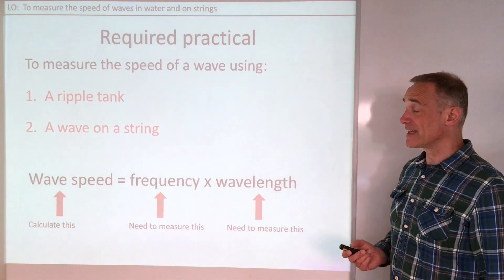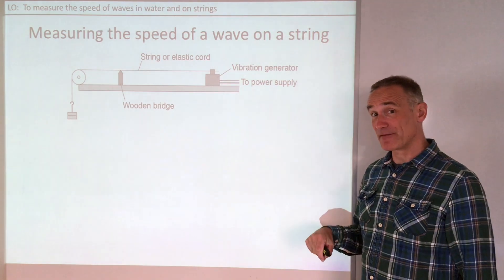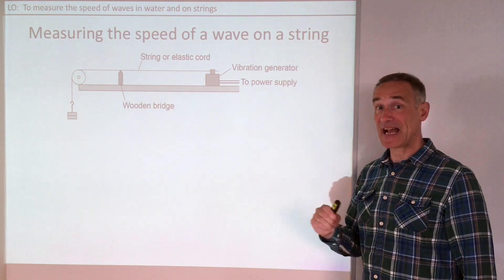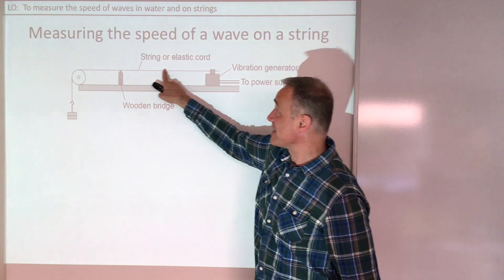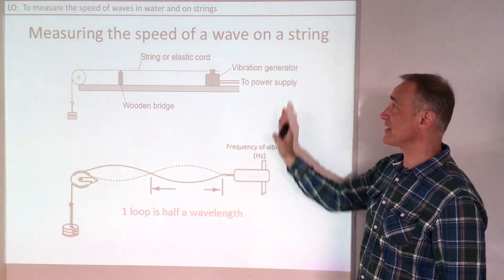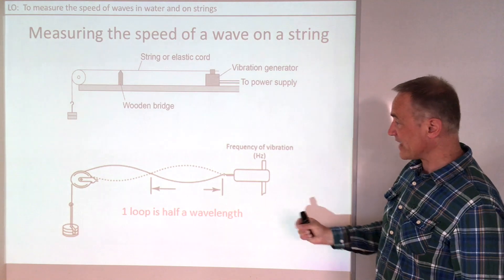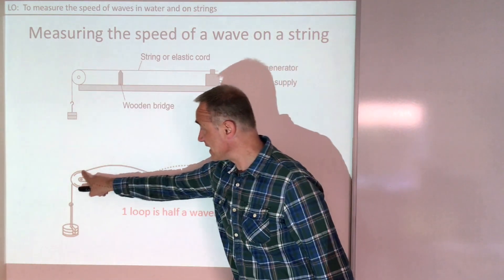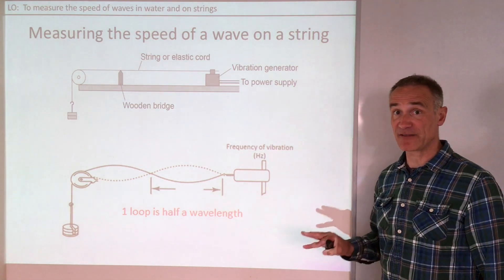The next experiment is measuring the speed of waves on a string. This experiment comes down from A-level and you don't have to understand all of how it works — you just need to measure the wavelength and frequency and calculate speed. We have a vibrator generator sending waves down to a wooden bridge where they reflect back and set up a standing wave. At certain frequencies it creates loops, and the distance of one loop is half a wavelength, because two loops make a whole wavelength.